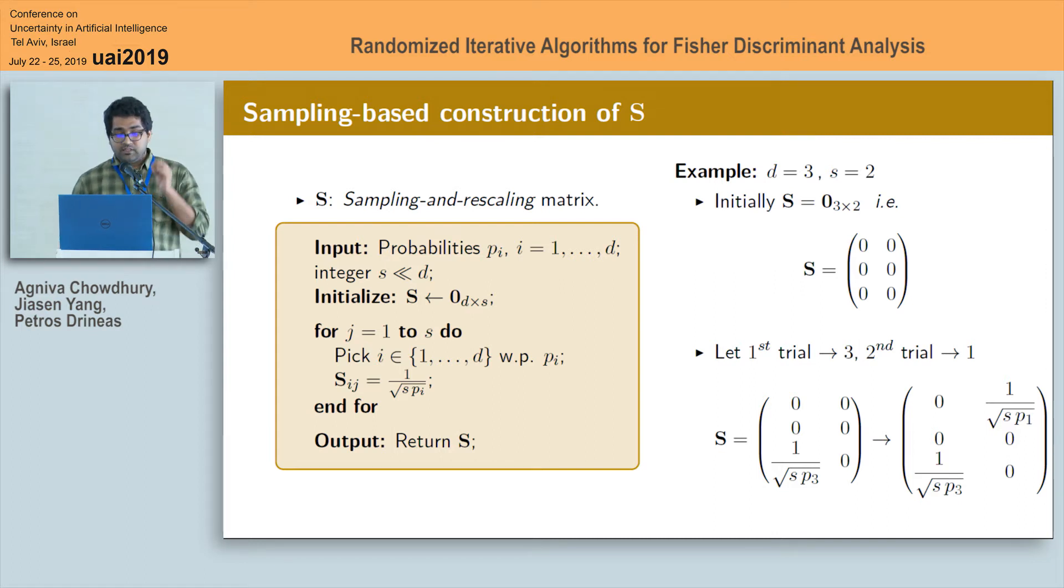Output of this algorithm indeed results in a very sparse matrix and the sparsity is given by small s and you can also see from this example that the output matrix S has one and only one non-zero entry per column.